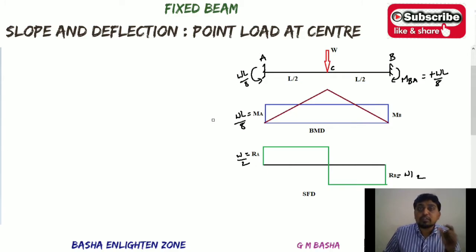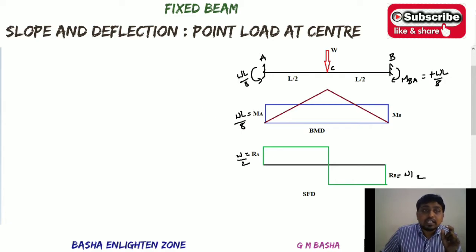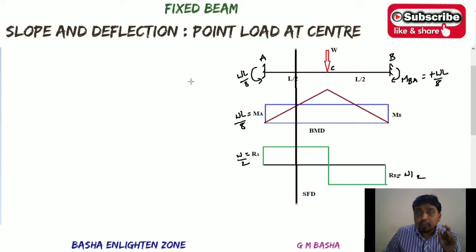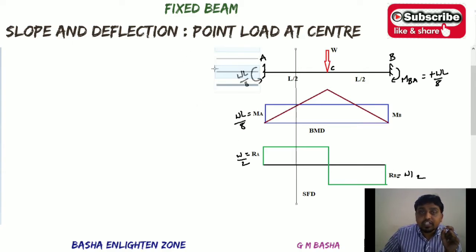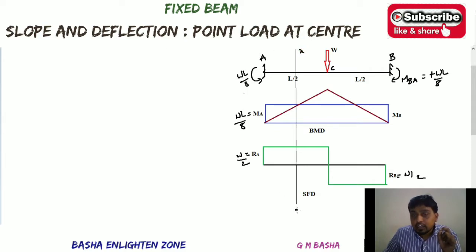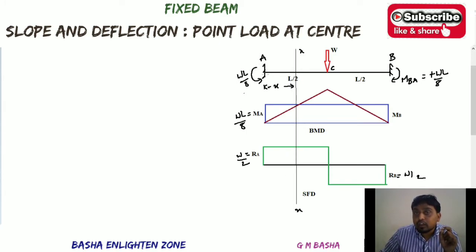To do this, consider a section XX in between A and C at any distance X from A. We are considering section XX at a distance X from end A in the region AC. Then we resolve the moments up to this section X. The reaction at A is RA = W/2 and there is also a moment MA acting.